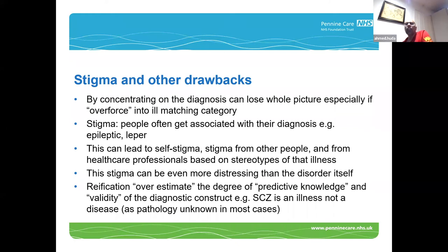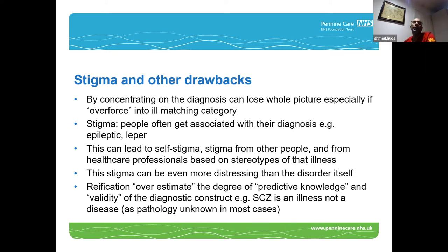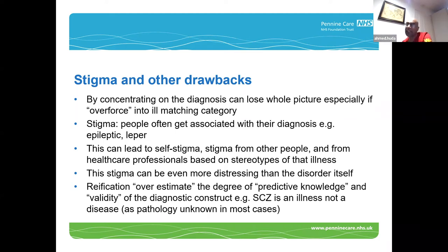Stigma and other drawbacks of diagnosis: you can lose the hope picture, you can overforce people into an ill-matching category, and doctors can get attached to a diagnosis and won't change it even though the data shows it should be something else. People often get associated with their diagnosis — that's why we've got terms like 'epileptic'. There can be stigma from other people and from healthcare professionals. For some people the stigma can be as distressing, or more distressing, than the condition itself. There's also reification — thinking of these diagnostic constructs as diseases rather than what they may variously be.